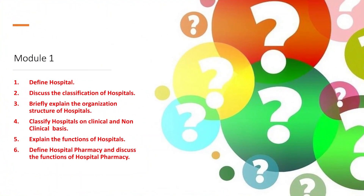From module 1, these are very important questions we should prepare well in advance to score great marks in the examination. First question: define hospital and discuss the classification of hospitals. Next: briefly explain the organizational structure of hospitals. Then: classify hospitals on clinical and non-clinical basis. Explain the functions of hospitals. Define hospital pharmacy and discuss the functions of hospital pharmacy.